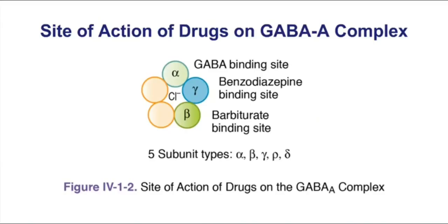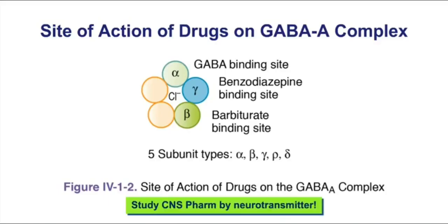When you study CNS pharmacology, my recommendation is to think about each of our chapters in our book by the type of neurotransmitter that that chapter deals with. So follow the note at the bottom of this slide: study by transmitter. As we look at chapter 1 and think about sedative hypnotic drugs, you should be thinking about GABA as the major transmitter, because this is how many of these drugs in this chapter are going to work.